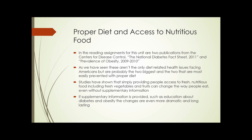Studies have shown that simply providing people with access to fresh, nutritious food — including fresh vegetables and fruit — can change the way people eat, even without supplementary information. That's an amazing thing. If supplementary information is provided, such as education about diabetes and obesity, the changes are even more dramatic and long-lasting.